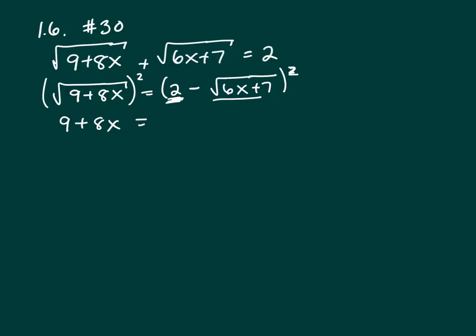Which is square the first term, which is 4. Multiply 2 times a negative square root of 6x plus 7. And then multiply that by 2. You always double it. So that will give you minus 4 square roots of 6x plus 7. The last sign is always positive and you square your last term, which is, then that would be 6x plus 7.